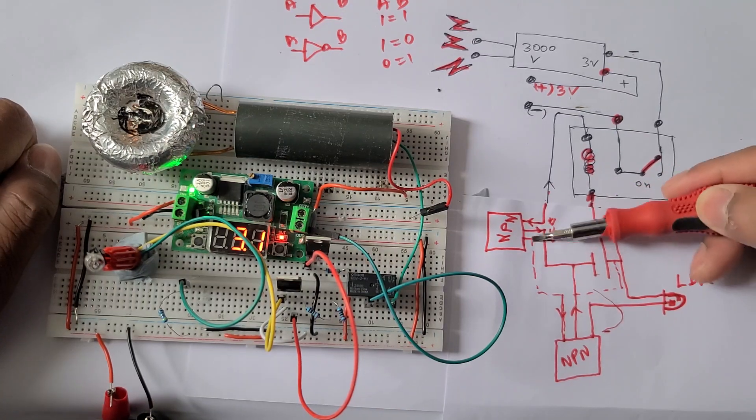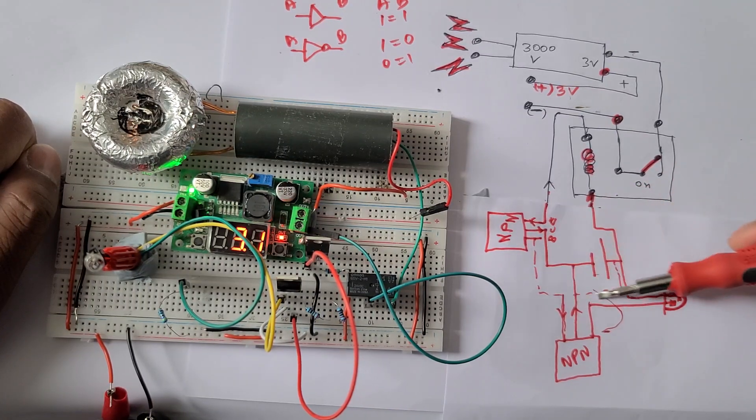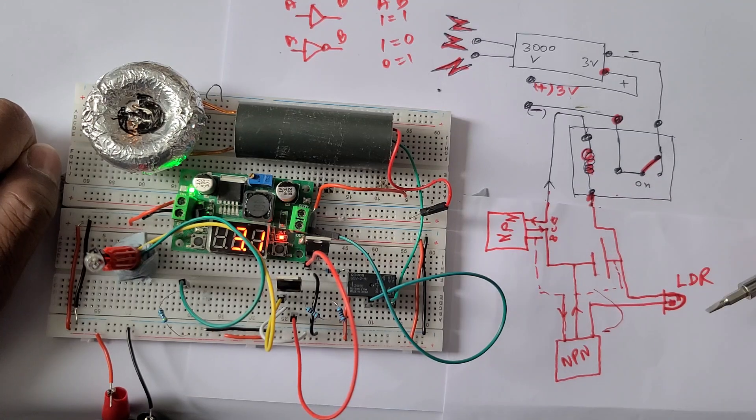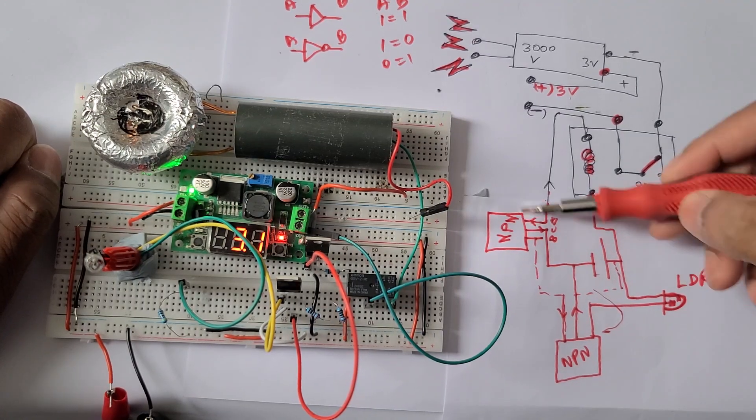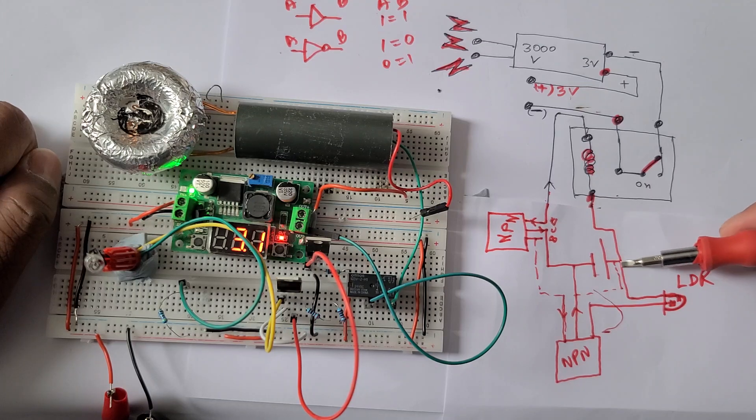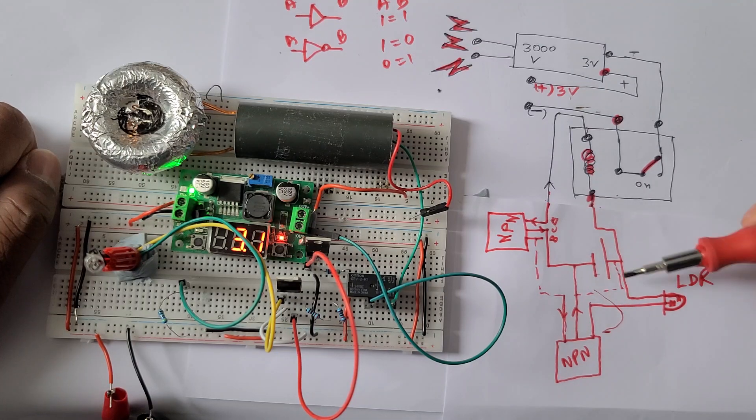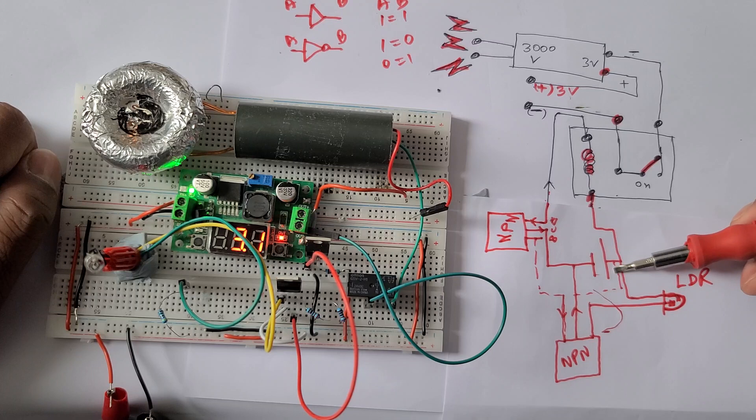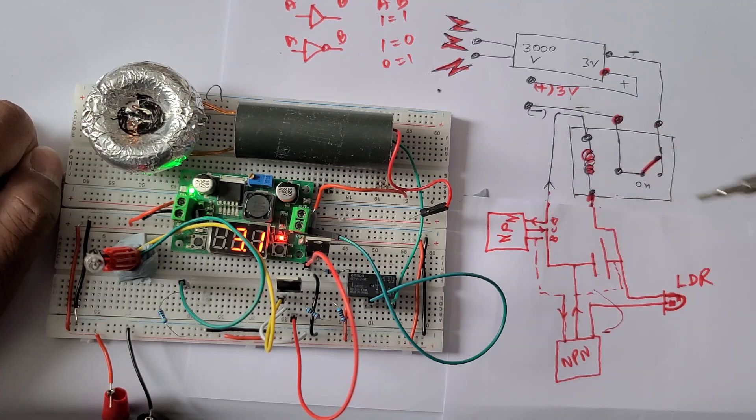So in normal condition this transistor is always on because it is connected to the plus 10 volt which is plus 3 volt and it gets always on.